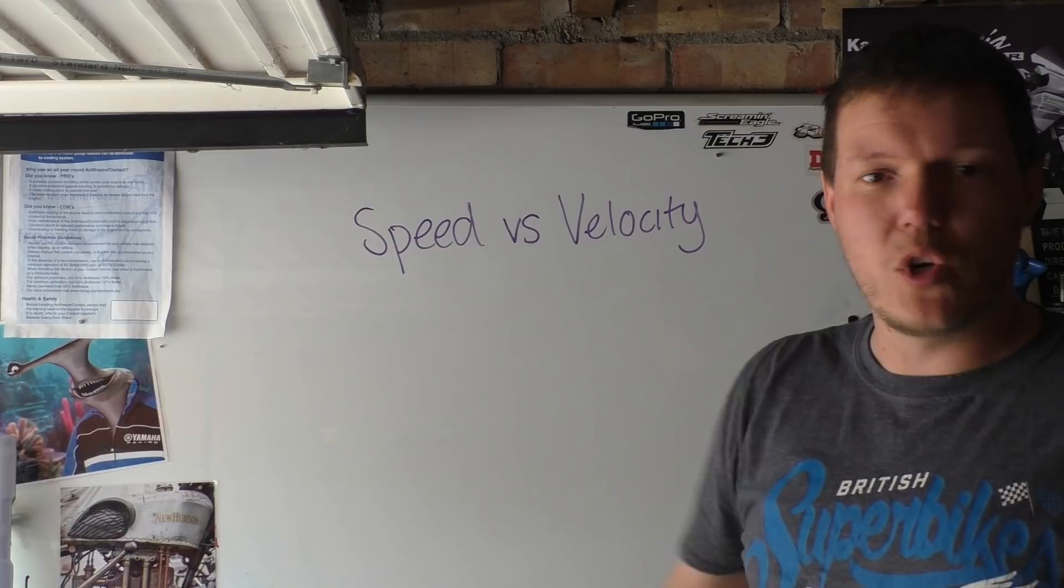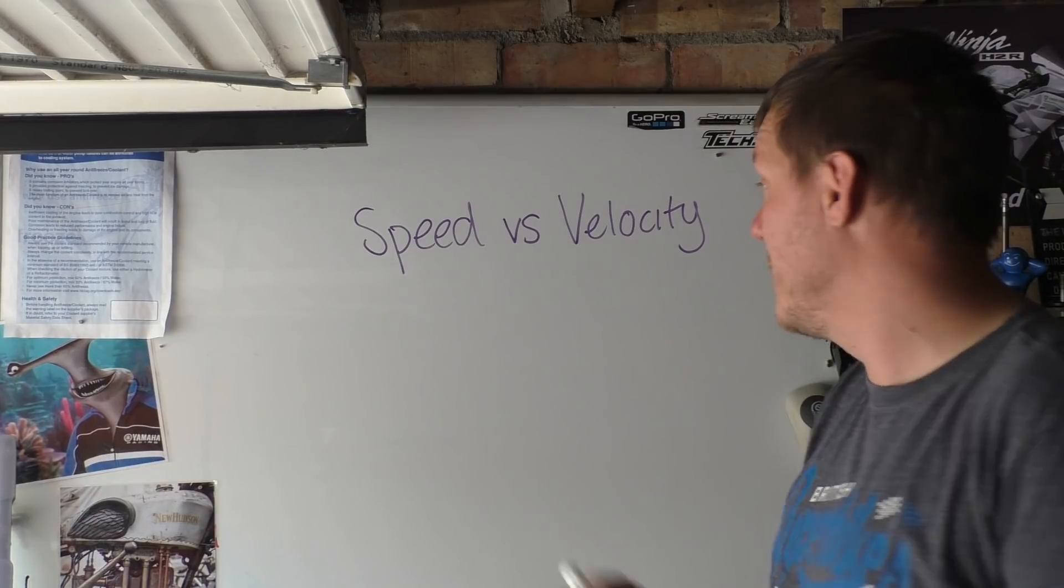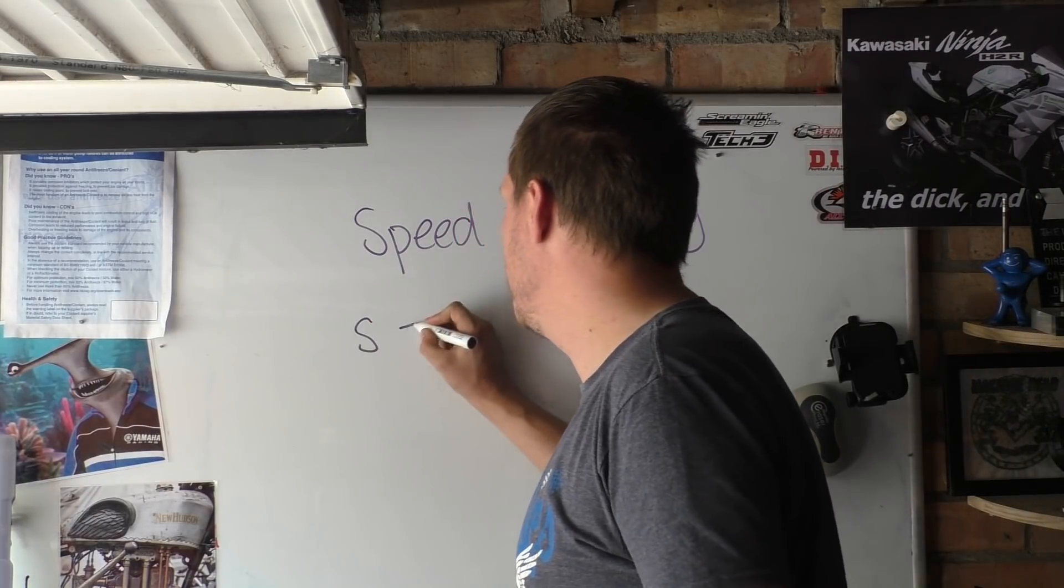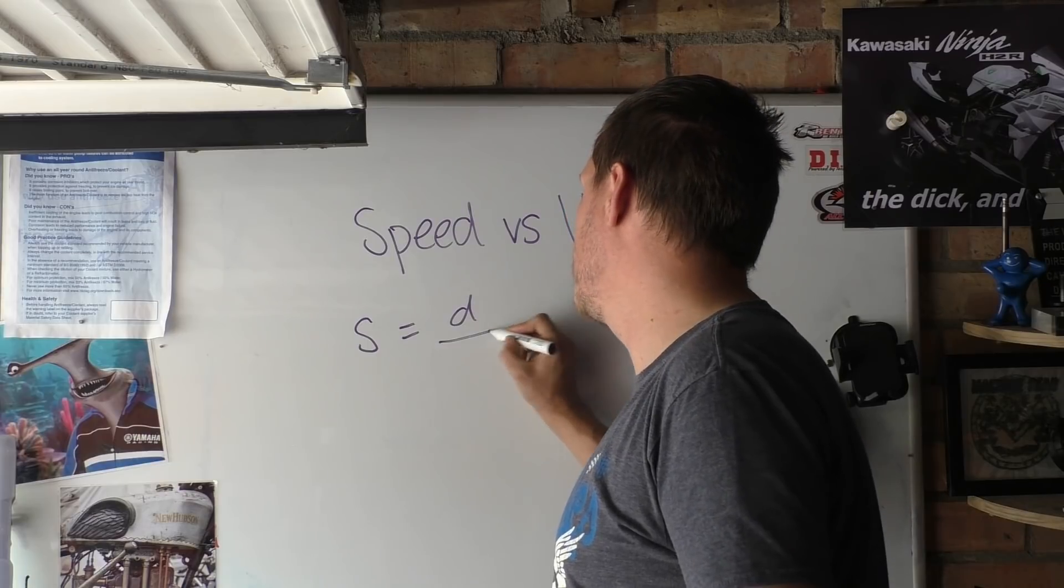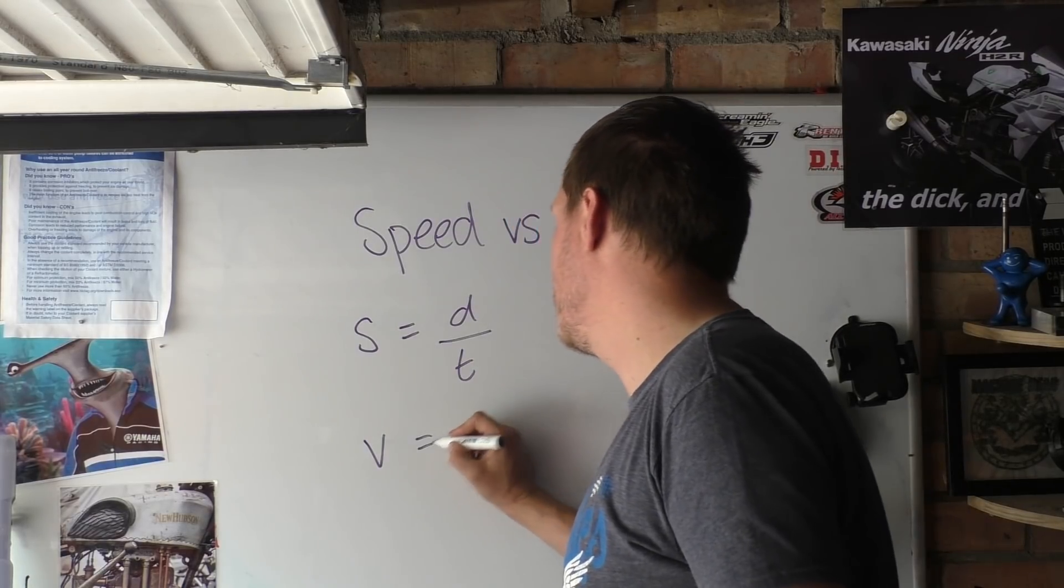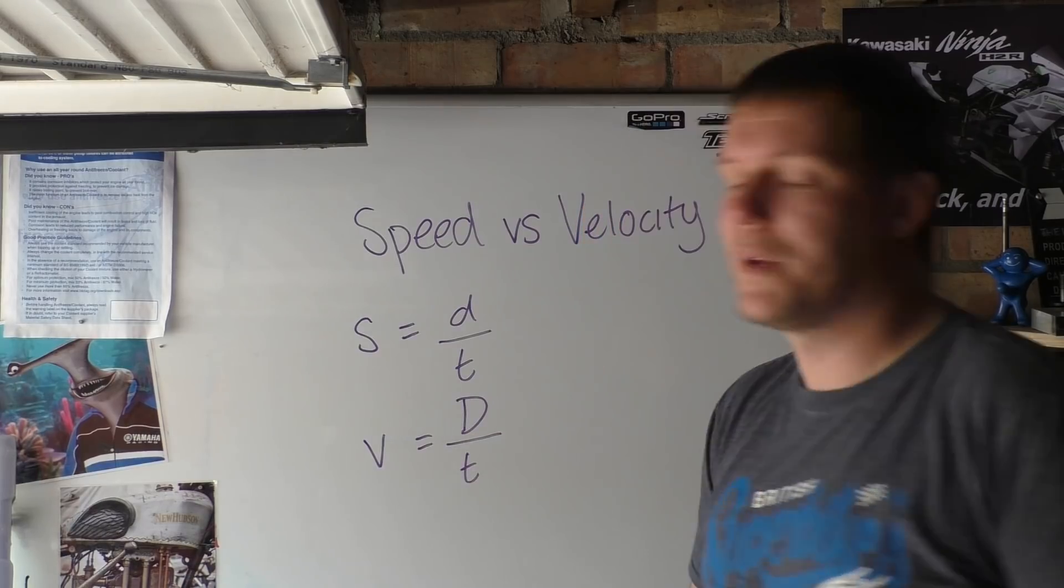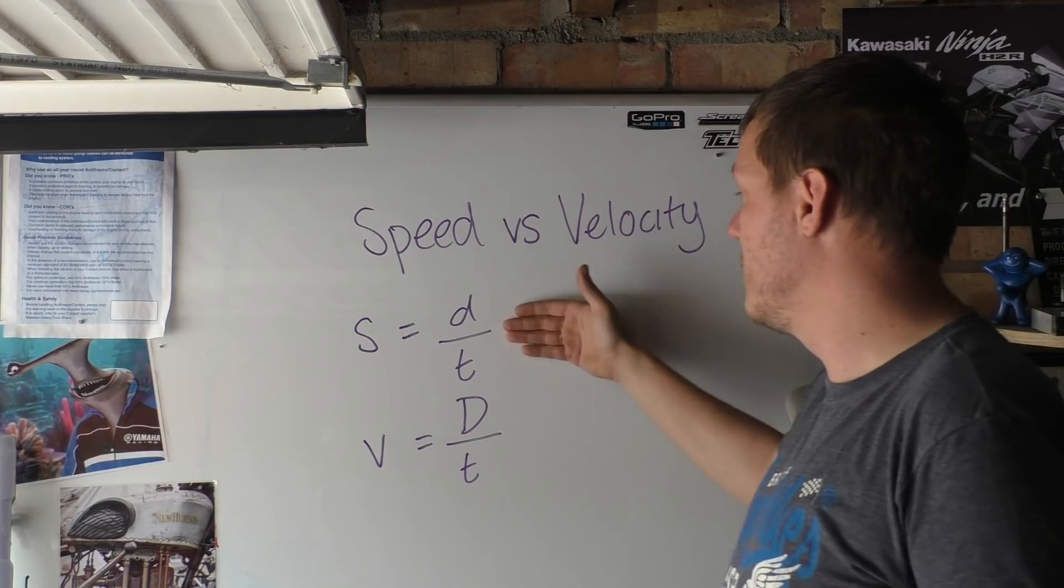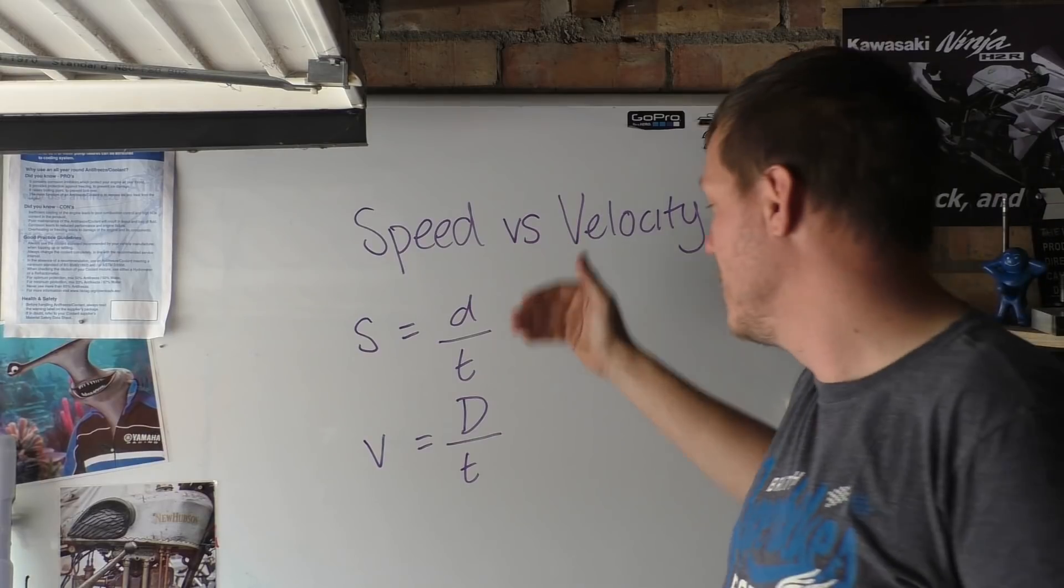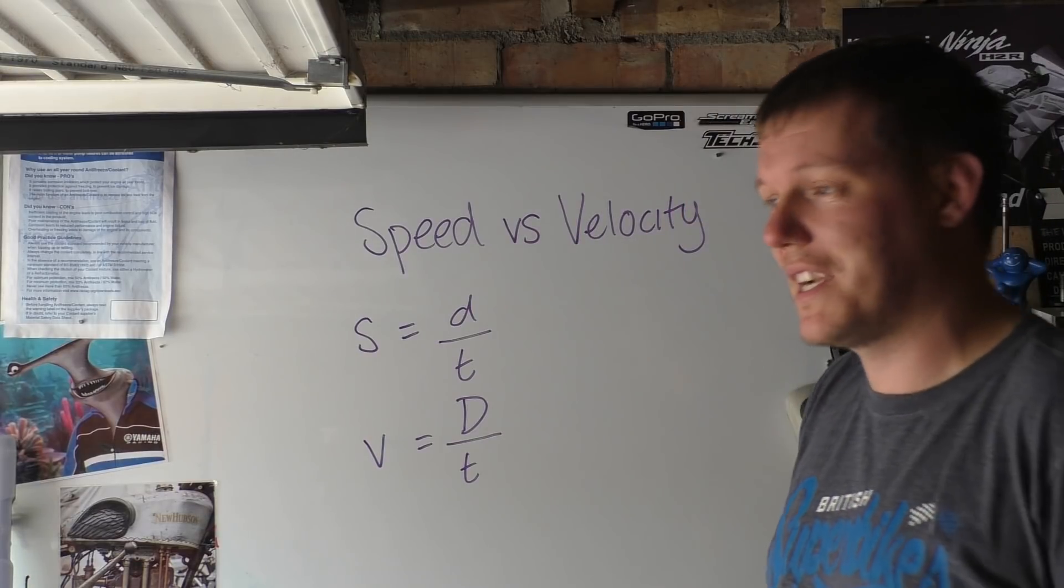So what we'll do is we'll chuck out the classical physics bit of it first. Speed equals distance over time and velocity equals displacement over time. So basically all we're doing is we're going from childish English you do at primary school to the big capital letters that you do at secondary school.